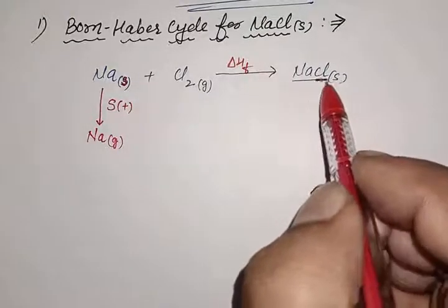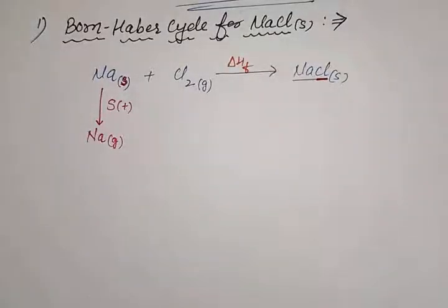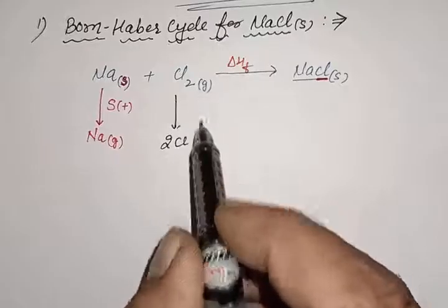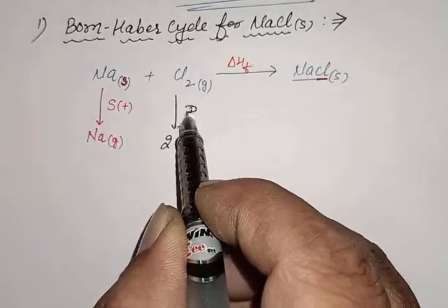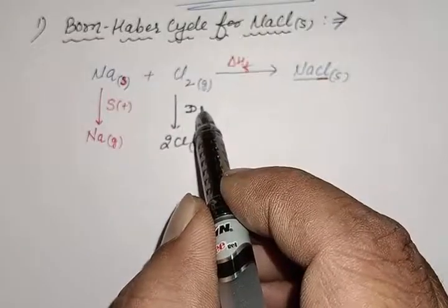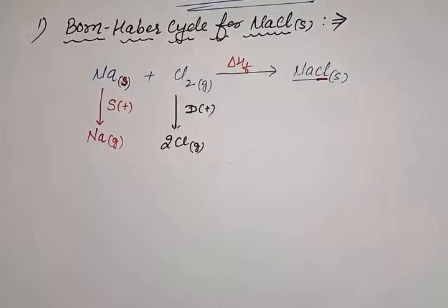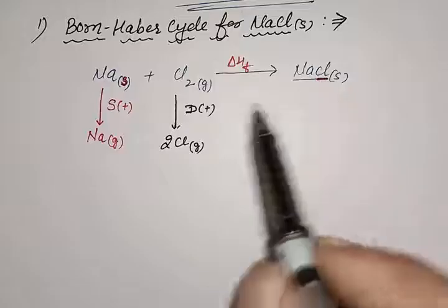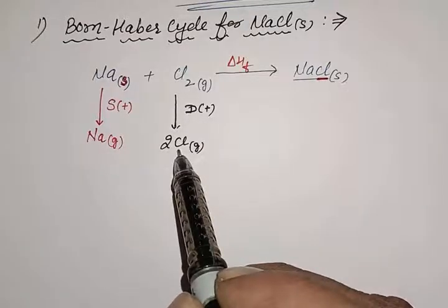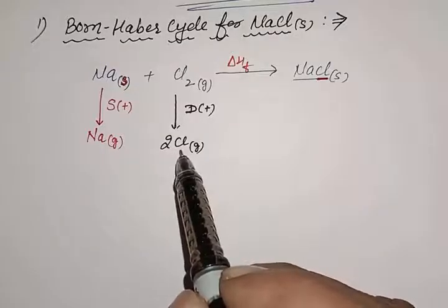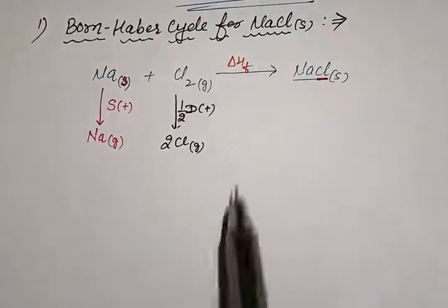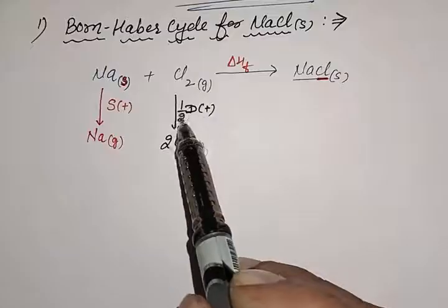Similarly, we need one Cl, but here we have Cl₂. So we have to dissociate this Cl₂. The amount of energy required to dissociate a molecule into its gaseous atoms is called dissociation enthalpy, and this value is also positive because energy is required. Here we need one Cl but Cl₂ gives 2 Cl, so the dissociation enthalpy is divided by 2.